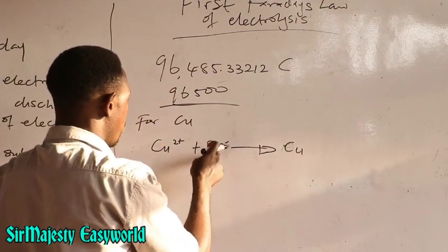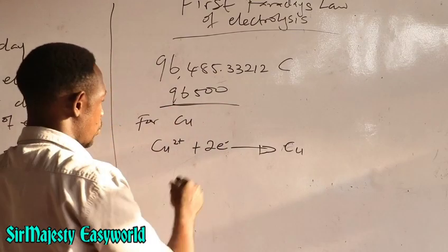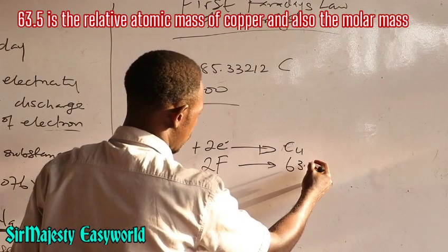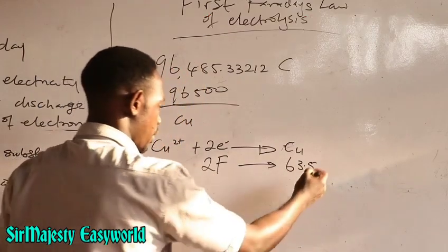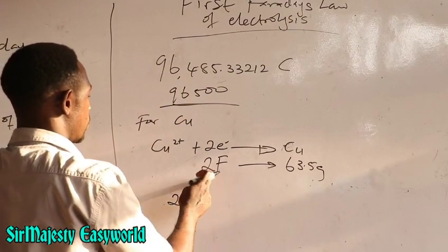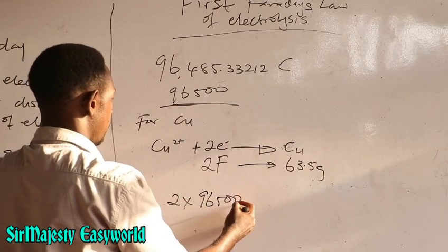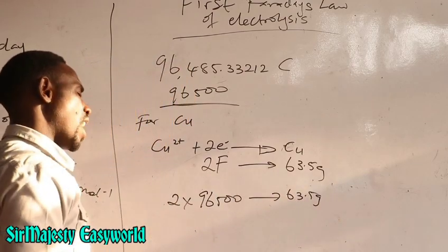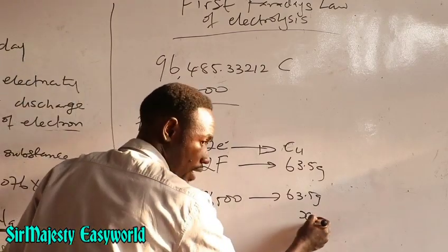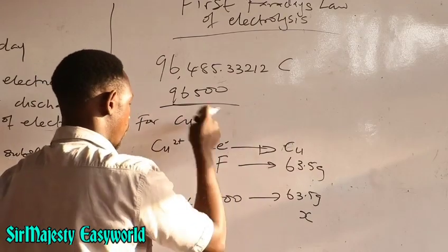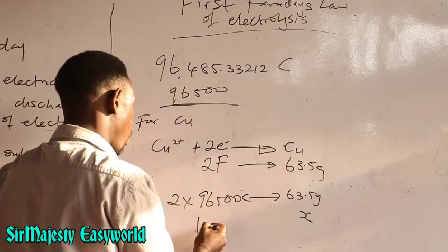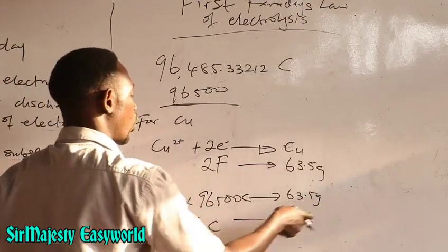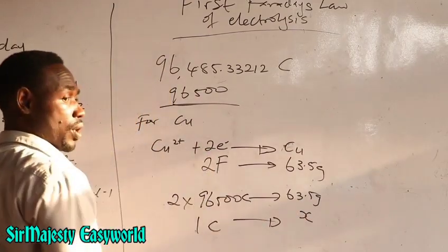The molar mass of copper is 63.5 grams. So 2 × 96,500 coulombs will discharge 63.5 grams of copper. Since the electrochemical equivalent is the mass discharged by 1 coulomb, if 193,000 coulombs discharges 63.5 grams, then 1 coulomb discharges X grams. So X equals 63.5 divided by 193,000, which gives approximately 0.000329 grams.